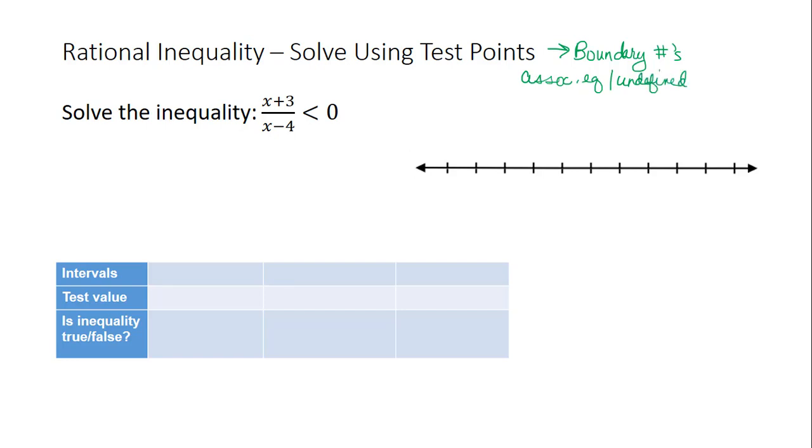We find the solutions of the associated equation by setting the quantity x plus 3 divided by the quantity x minus 4 equal to 0. We can cross multiply to get x plus 3 is equal to 0, or x is equal to negative 3.